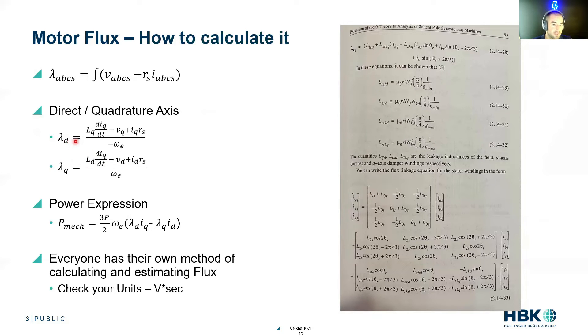we more or less get to our D axis flux equals inductance times the rate of change of Q axis current minus the Q axis voltage plus the Q axis losses, and these look really similar, don't they?